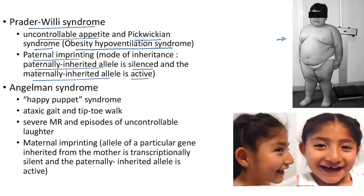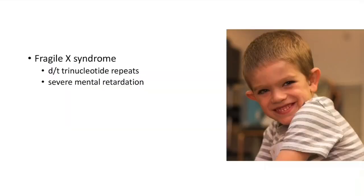Angelman syndrome, also known as happy puppet syndrome, is characterized by ataxic gait and tiptoe walk. There will be severe mental retardation and episodes of uncontrollable laughter. The mode of inheritance is maternal imprinting — the maternally inherited allele is transcriptionally silent and the paternally inherited allele is active.